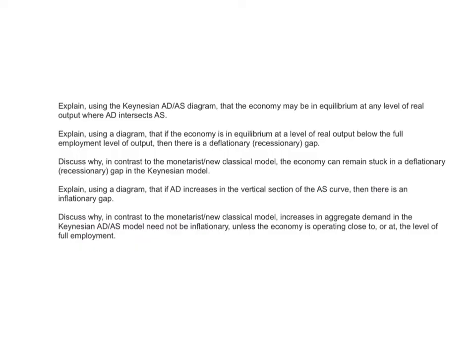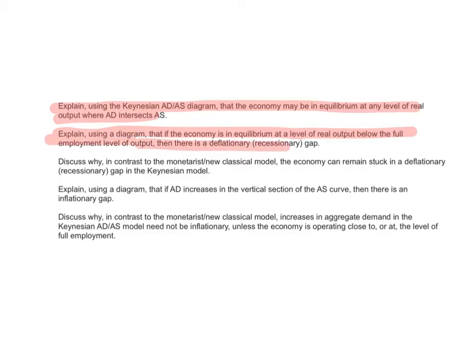The learning outcomes for this video are: to explain using the Keynesian ADAS diagram that the economy may be in equilibrium at any real level of output where aggregate demand intersects aggregate supply. Then I'm going to explain using a diagram that if the economy is in equilibrium at a level of output below the full employment level, there is a deflationary or recessionary gap. I'll discuss why, in contrast to the Monetarist New Classical Model, the economy can remain stuck in a deflationary or recessionary gap in the Keynesian Model.